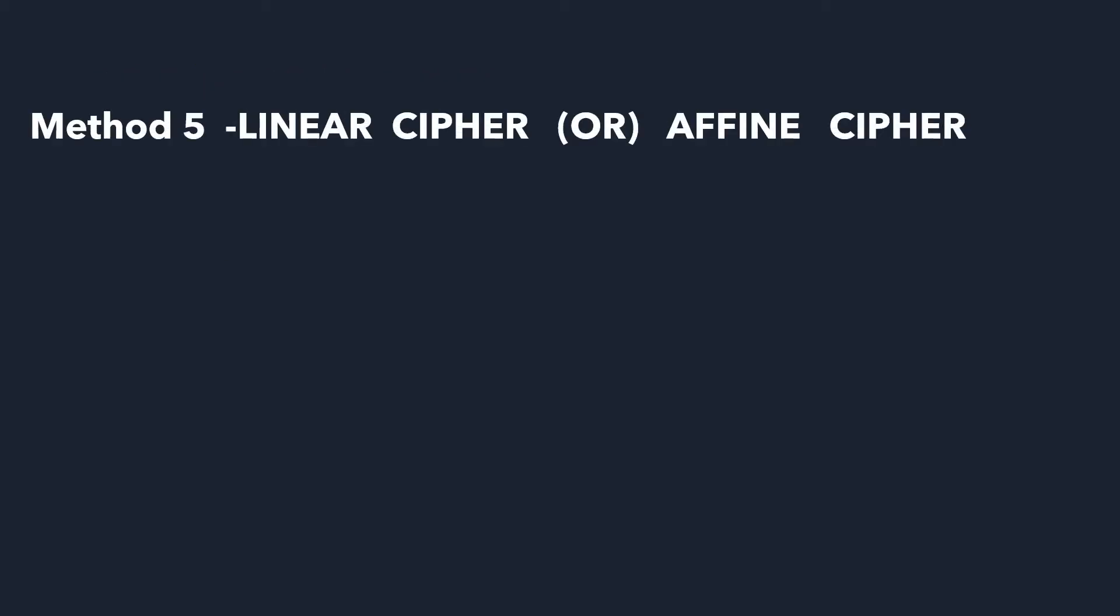So this is method five, which is called the linear cipher or affine cipher. I have already created videos on various methods. Method one was Julius Caesar cipher, method two is mono-alphabetic cipher, number three was poly-alphabetic, and number four was Blaise method.